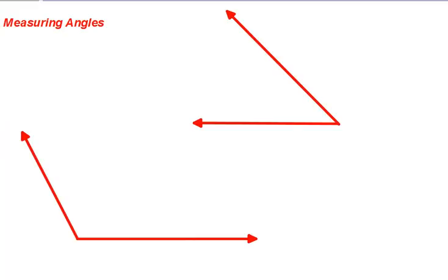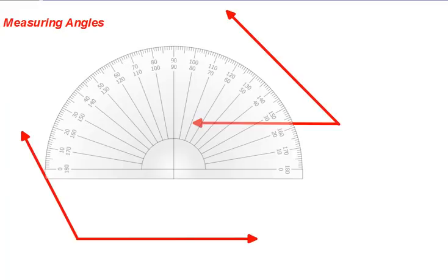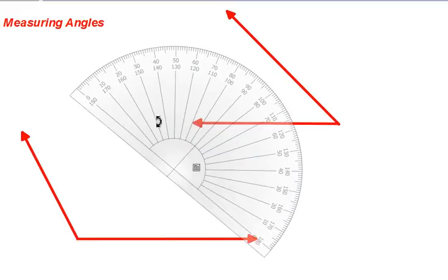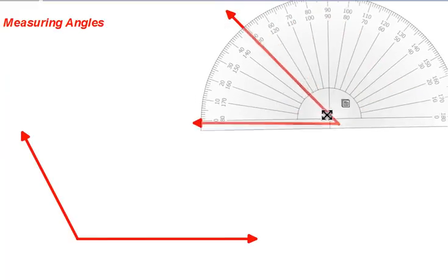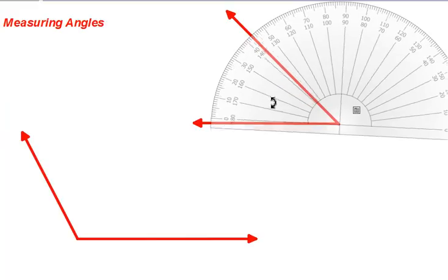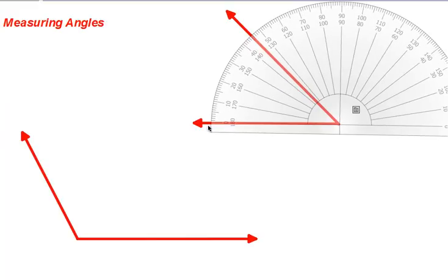Measuring angles - you'll need a protractor. When measuring an angle with a protractor, you want to line up several things. Make sure that the crisscross on your protractor is lined up with your vertex. Rotate your protractor so it's lined up with your ray. Then start counting at zero, wherever the first ray is, until you get to the other ray.